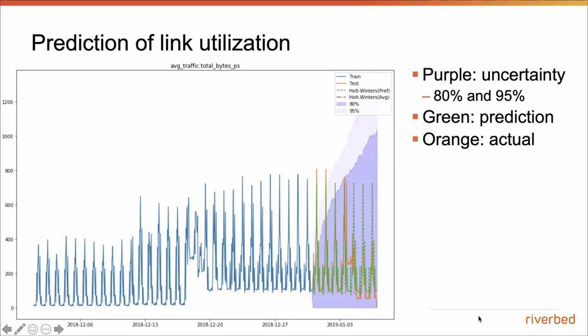Finally, here's a link utilization example. There's an obvious daily pattern, and I want to show what happens to prediction uncertainty as we forecast further out. The green line predicts days out what network traffic will look like. The purple line shows both the 95th and 80th confidence levels. I've also plotted the real data as an orange line. The challenge is: how do we deal with this in terms of human interaction — making predictions and giving a confidence level? It's a probability, and people are typically really poor with probabilities.